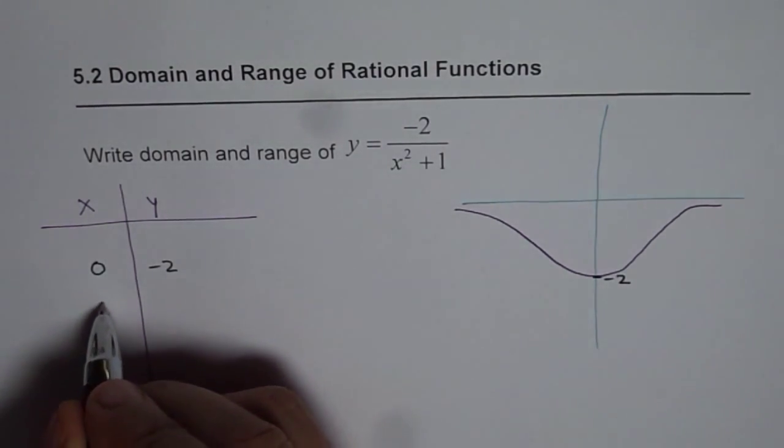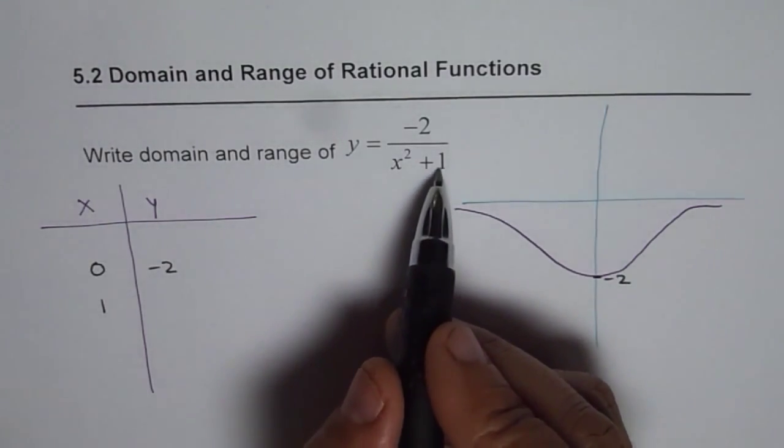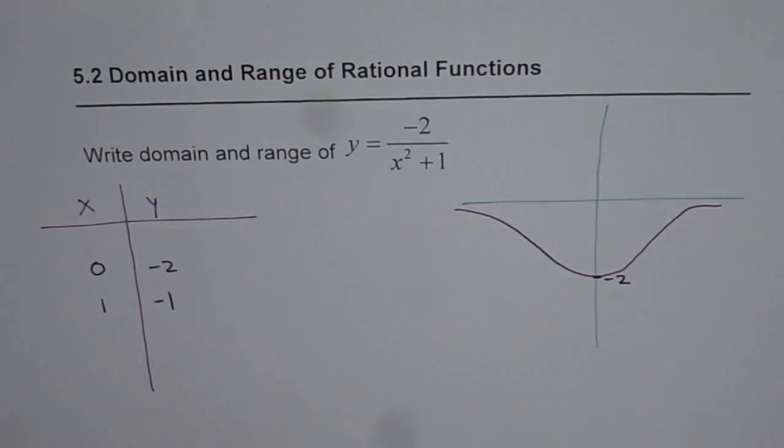If I take x equals to 1 in that case it will be 1 plus 1 which is 2, minus 2 divided by 2 will be minus 1.